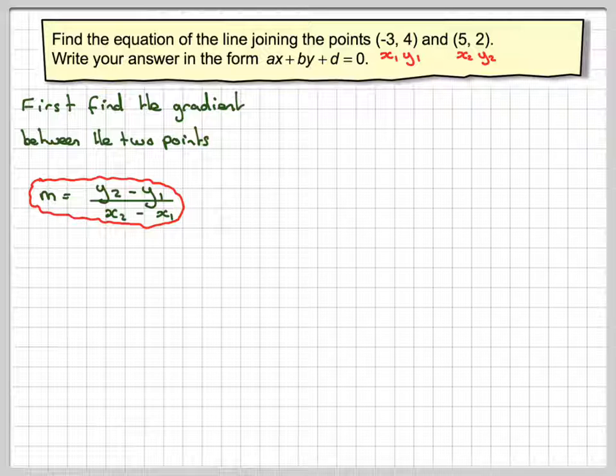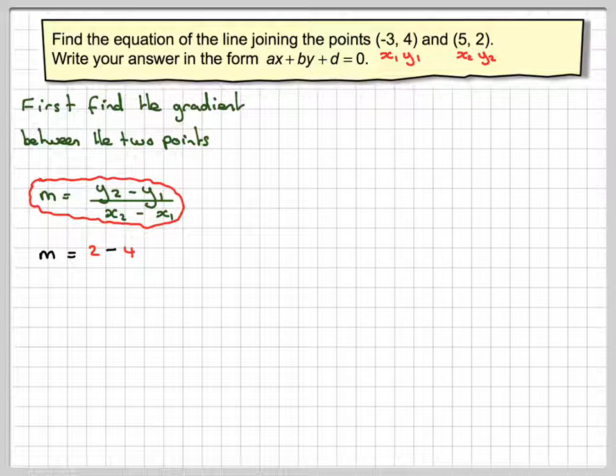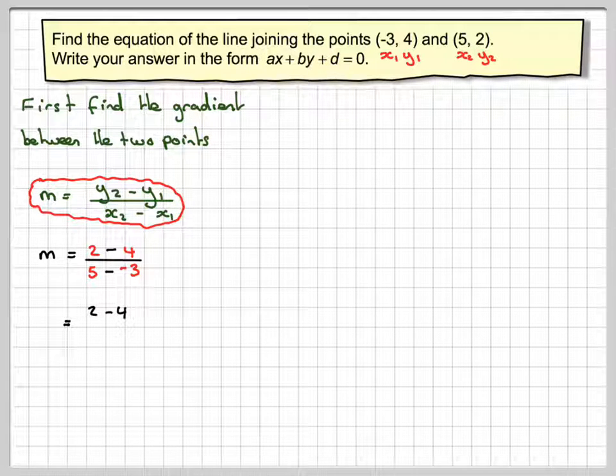Substituting the numbers in, we're going to get m equals 2 minus 4 divided by 5 minus minus 3. So that's going to give me 2 minus 4 on the top, 5 minus minus 3 gives me 5 plus 3 on the bottom.